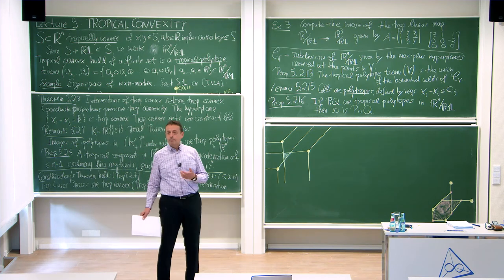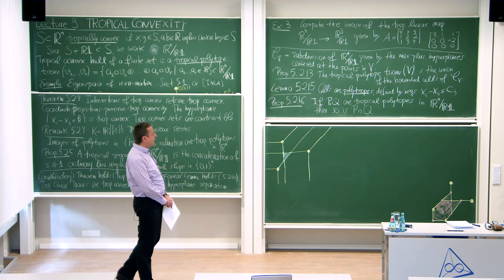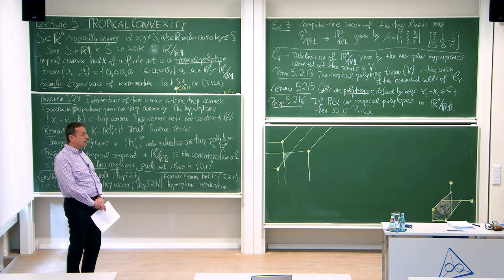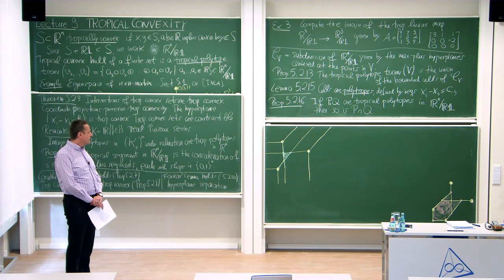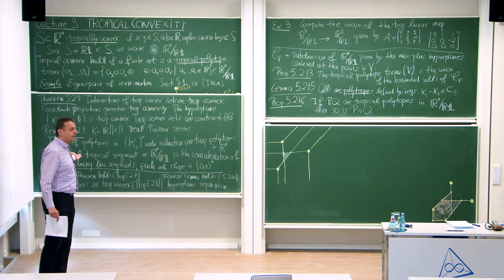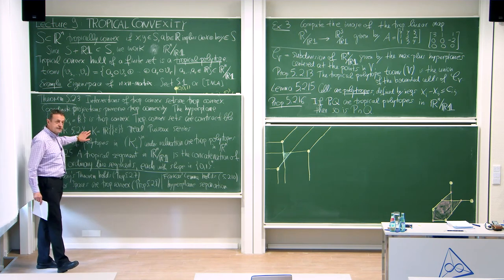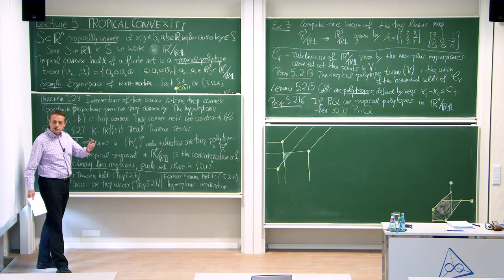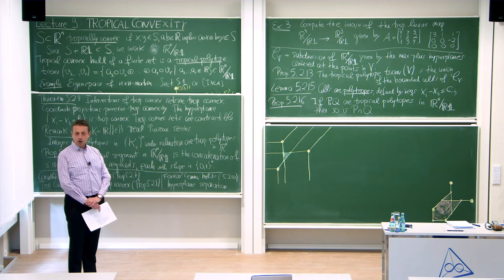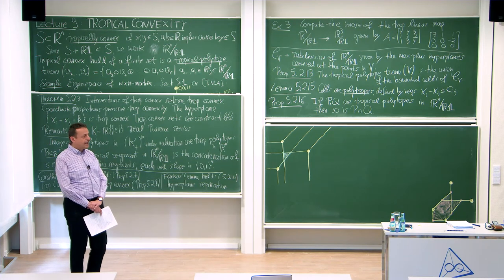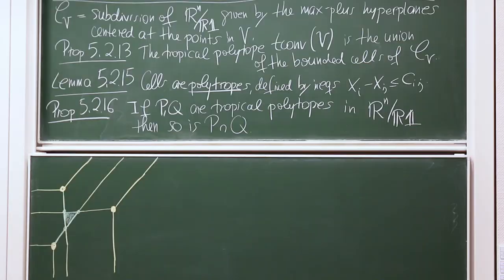By remark 5.2.4, you can take a classical linear programming problem, phrase it over k by introducing a small epsilon into your linear programming formulation, and you get for free a tropical linear program — that is, the problem of optimizing a tropical linear function over a tropical polytope.